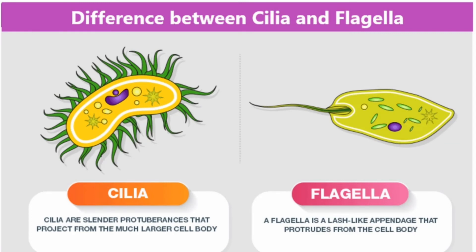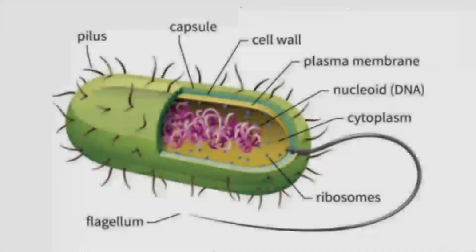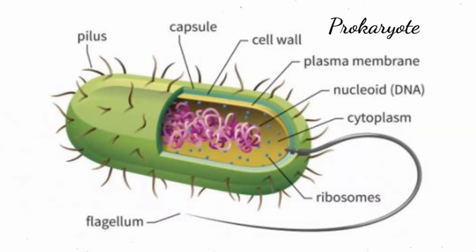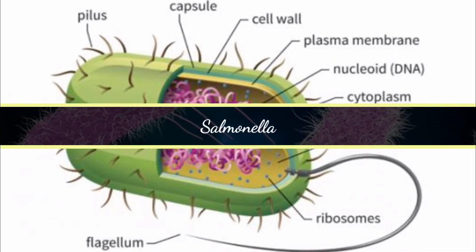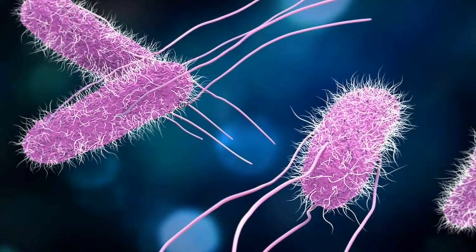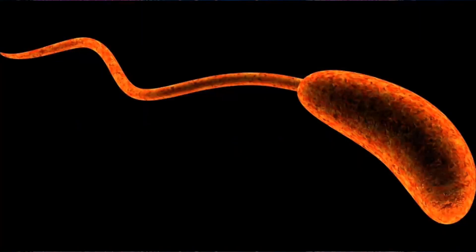Aside from cilia and pseudopodia, one other method of locomotion is that some cells will just have one larger tail-like extension that can be whipped around to move, which is known as a flagellum. Bacteria and archaea cells most commonly have flagella as their method of locomotion. For example, on the screen we can see an image of Salmonella. We can very clearly see the long, whip-like tail structures that protrude from the cells, and even compared to the cells themselves, the flagella are relatively thin.